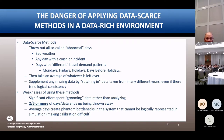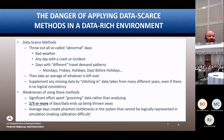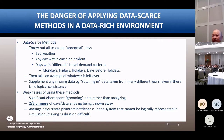The danger of applying data-scarce methods in a data-rich environment is that we throw out so-called abnormal days — incident days, rain days. We collect Tuesday, Wednesday, and Thursday, then throw away Monday, Friday, and the weekend, so we've already thrown out four out of seven days. By the time we discard all those so-called abnormal days, we're throwing away at least two-thirds of our data. Does that make any sense?